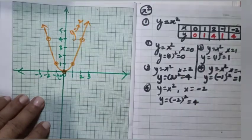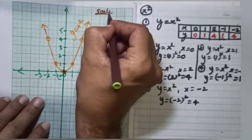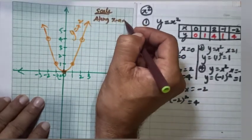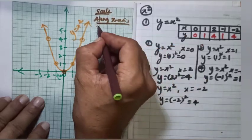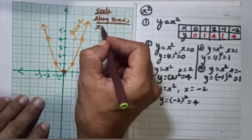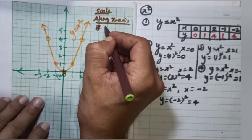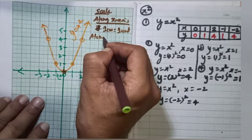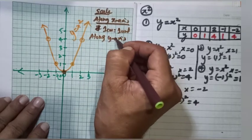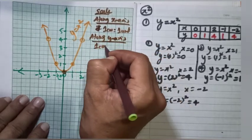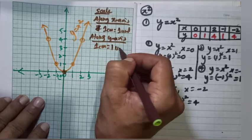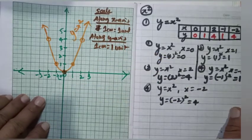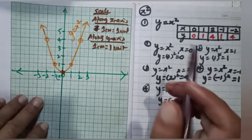We write the equation on the graph: y is equal to x squared. For the scale, along the x-axis: 1 centimeter is equal to 1 unit. Along the y-axis: 1 centimeter is equal to 1 unit. That completes the first graph of y equals x squared.